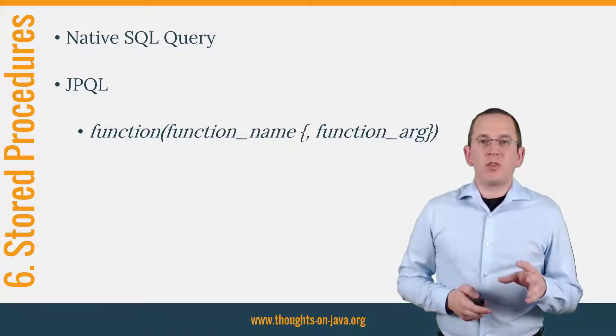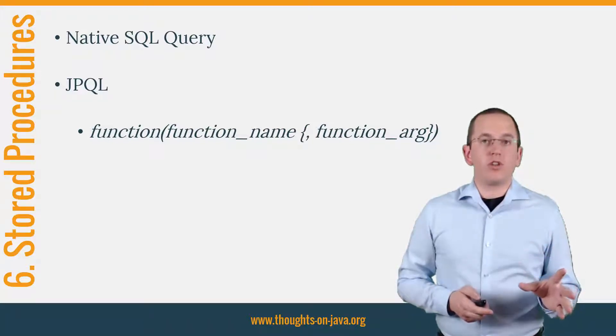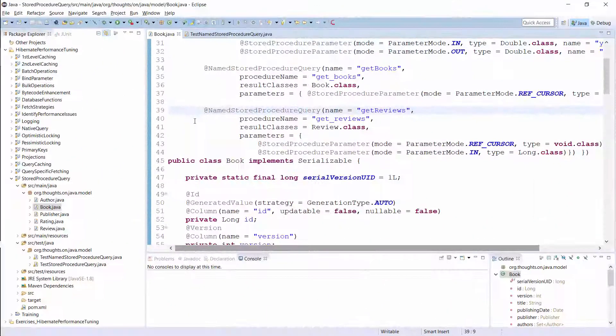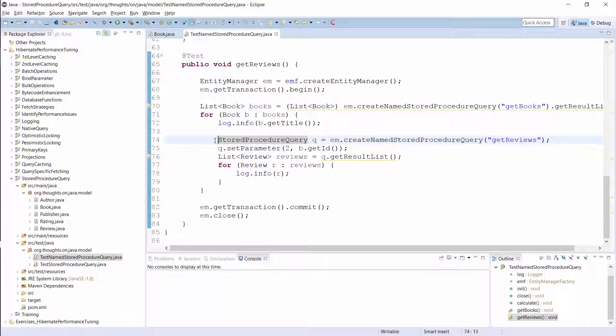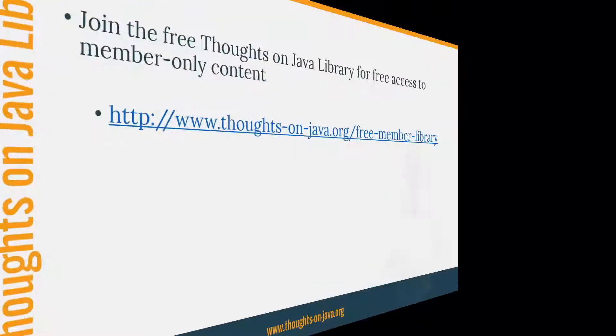Since JPA 2.1, you can do that with a named stored procedure query or an ad hoc stored procedure query. Here you can see the example of a named stored procedure query. It defines the call of the getReview stored procedure. It tells Hibernate to provide an input parameter of type long and to expect a refcursor as a result. The result class parameter tells Hibernate to map all records of the refcursor to review objects. You can call the named stored procedure query in a similar way as you would call a named query. You just need to call the createNamedStoredProcedureQuery method to instantiate the query, set the input parameters and retrieve the result.